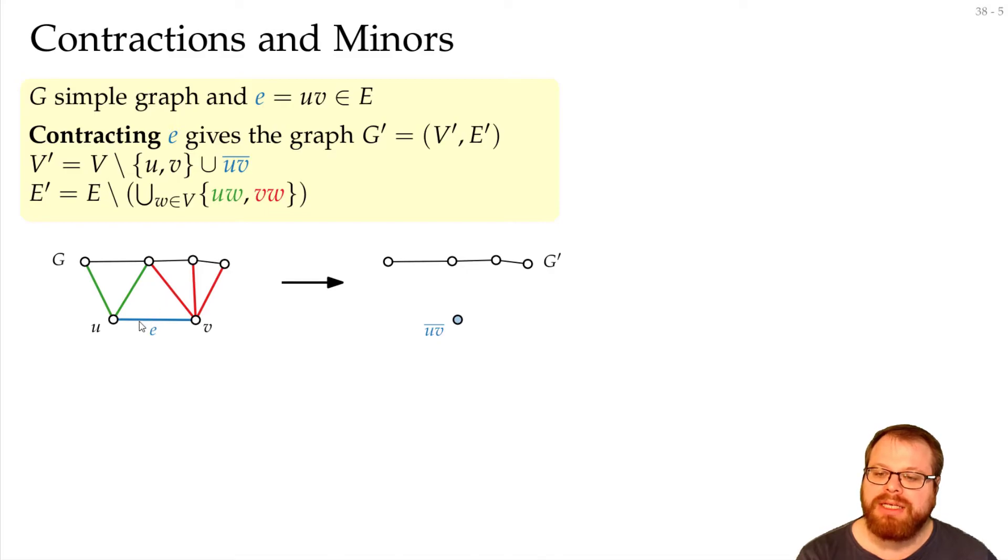But for the green, red and blue edges, we have a new merged vertex here. So every edge that went to u before, now goes to uv. Every edge that went to v before, now again goes to uv. So if we add all these edges here, and put them to uv, then we get the new graph.